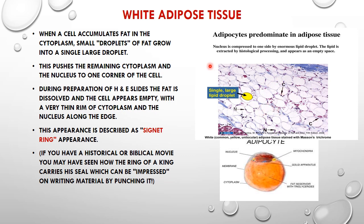White adipose tissue is named because a fresh specimen appears whitish to yellowish in appearance. This white adipose tissue is also called unilocular adipose tissue because it is composed of adipocytes which have a single large droplet of fat or lipids. This single droplet of lipids pushes the cytoplasm in a rim-like fashion and the nucleus into an eccentric position along with all the cellular organelles, giving what is called the signet ring appearance.